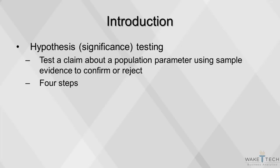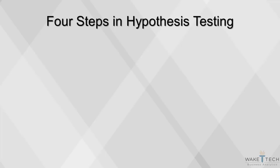This video will cover hypothesis testing, which is also called significance testing, and occurs when we test a claim about a population parameter using sample evidence that confirms or rejects the claim. There are four steps in the hypothesis testing process, all of which will be covered in this video.